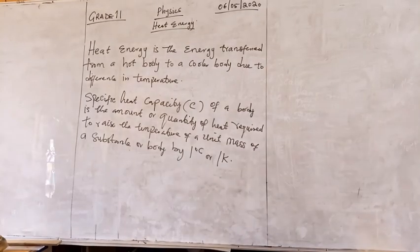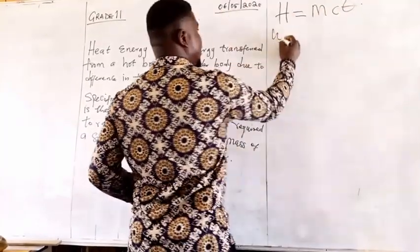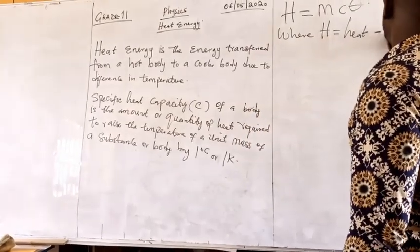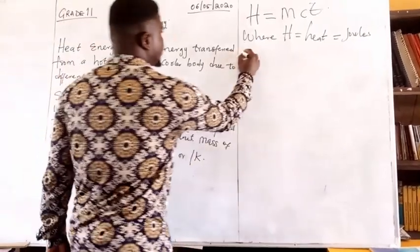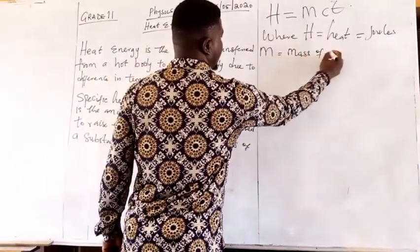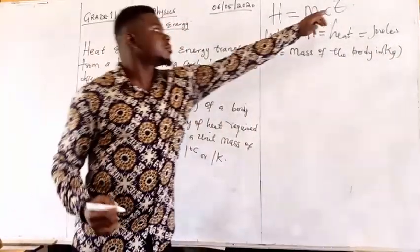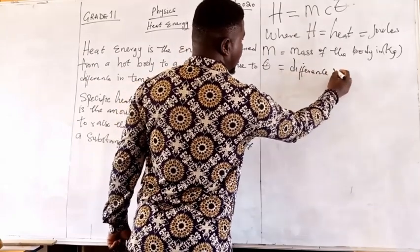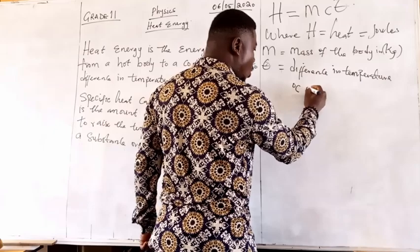The heat capacity of any body can be given as H = mcθ, where H is the heat or quantity of heat measured in joules, m is the mass of the body in kg, and θ is the change or difference in temperature measured in degree Celsius or Kelvin.